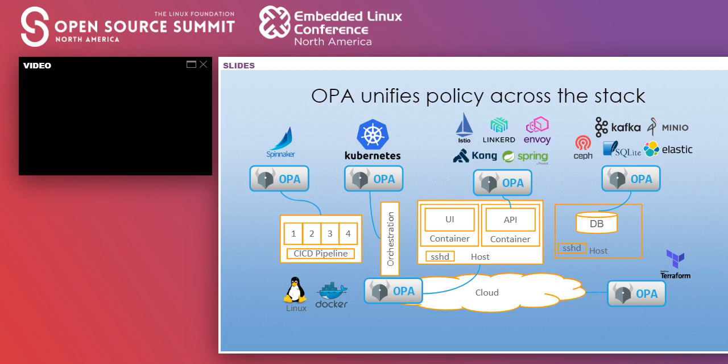Another integration is OPA with Linux PAM, where you can perform fine-grained authorization over SSH and sudo using the pluggable authentication module. OPA is also integrated with Kafka, Elasticsearch, SQLite, and Minio. In the case of Kafka, there are some topics with high fan-out and you probably don't want people writing to that topic, so you can use OPA to control who can write to such high fan-out topics. OPA is also integrated with service mesh projects like Istio, Linkerd, and Envoy for API authorization.